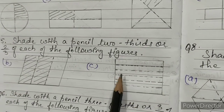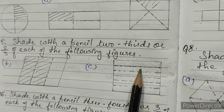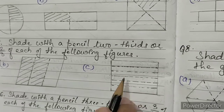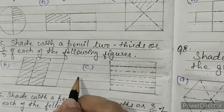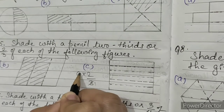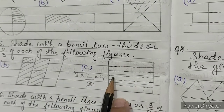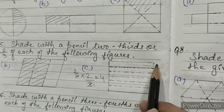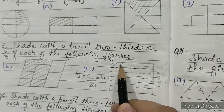C: this square is divided into 6 equal parts — 1, 2, 3, 4, 5, 6. We have to shade two thirds of this figure. So: 6 × (2/3) = 4. We have to shade four parts: 1, 2, 3, 4. So we will start shading.